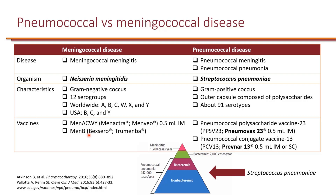When we talk about pneumococcal disease, there are two diseases this may be referring to: pneumococcal meningitis and also pneumococcal pneumonia. This is caused by Streptococcus pneumoniae, which is a gram-positive coccus, and there are 91 different serotypes.